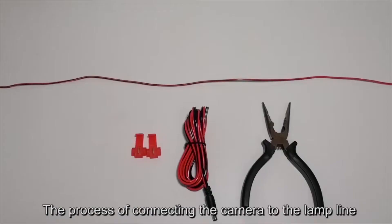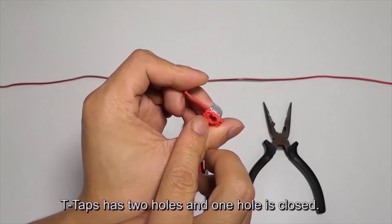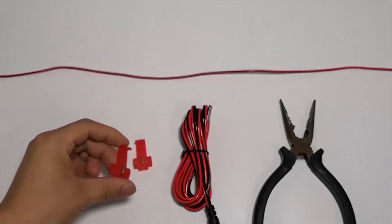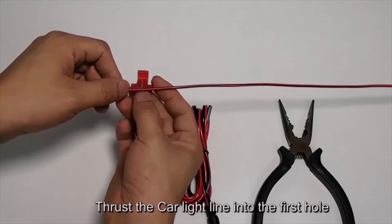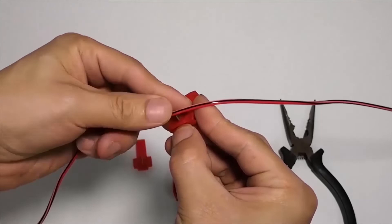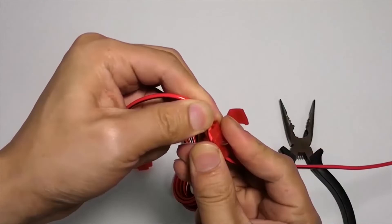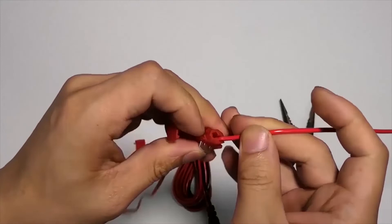The process of connecting the camera to the lamp line. T-Taps has two holes, and one hole is closed. The long line is the line of the lamp or the circuit line on the car. Thrust the car light line into the first hole.